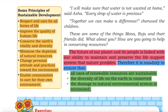These are some of the things Mona, Raju and their friends did. What about you? How are you going to help in conserving resources? The future of our planet and its people are linked with our ability to maintain and preserve the life support system that nature provides. Therefore, it is our duty to ensure that all uses of renewable resources are sustainable, the diversity of life on earth is conserved, and the damage to natural environmental systems is minimized.